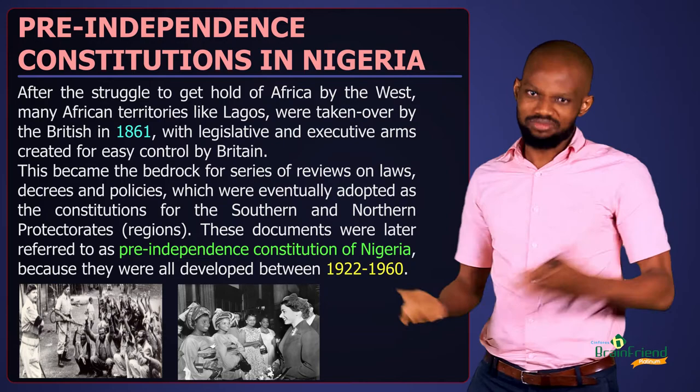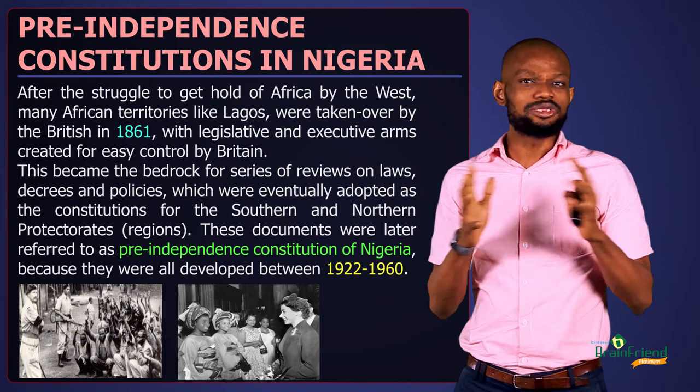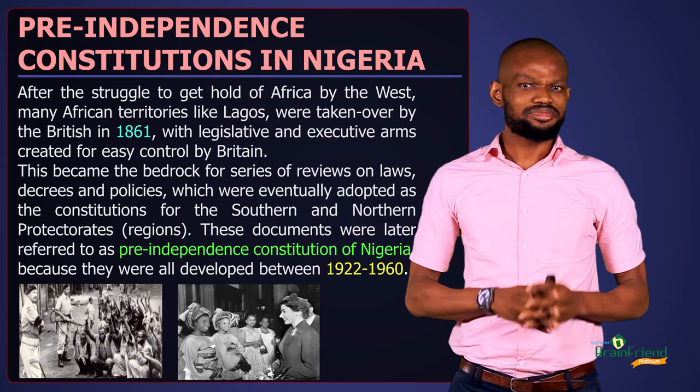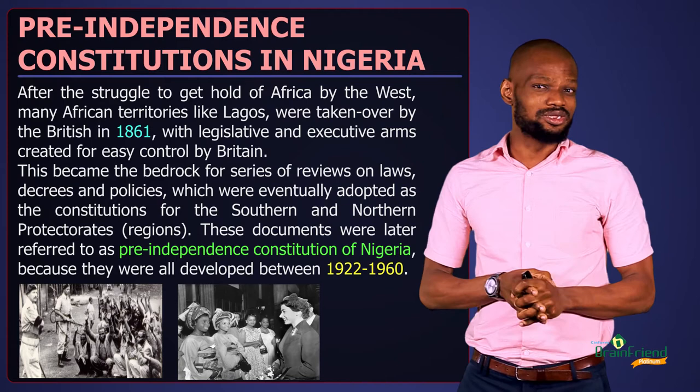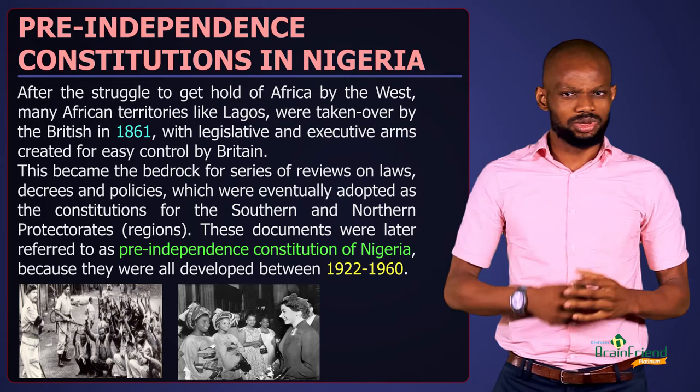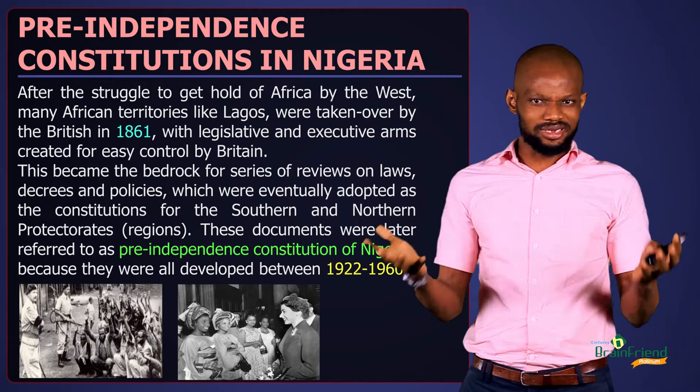Lagos was given its own political identity and was known as a colony, while there were southern and northern protectorates. This means Lagos had its own unique set of laws and constitution, whereas other parts of the country were governed by different laws. There were several constitutions or bodies of laws enacted by the British to enable them to rule Nigeria effectively.